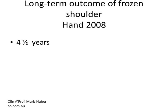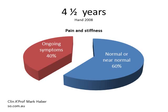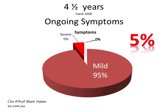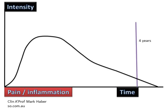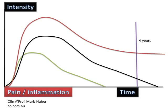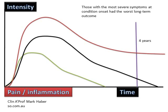Interestingly, a long-term outcome study of frozen shoulder performed by Dr. Hand in 2008 looked at people four and a half years on average after onset of their condition. He showed that at four and a half years, 60% of people had a near-normal shoulder, while 40% still had some ongoing symptoms. Of that 40%, 5% still had severe problems and 95% were mild. There seems to be a fair range in how this condition affects people — from fairly mild to terribly severe — with about 5% still severely affected at four years. He showed that those with the most severe symptoms at onset had the worst long-term outcome.